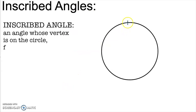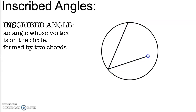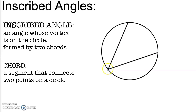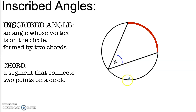So a central angle is always equal in measure to its intercepted arc. The next type of angle we want to talk about is called an inscribed angle. An inscribed angle has a vertex on the circle itself, and it's formed by two chords. A chord is just any line segment that connects two points on a circle. So if I pick two points on a circle and connect those with a straight line, that's called a chord. So we have two chords here. They intersect on the circle itself.